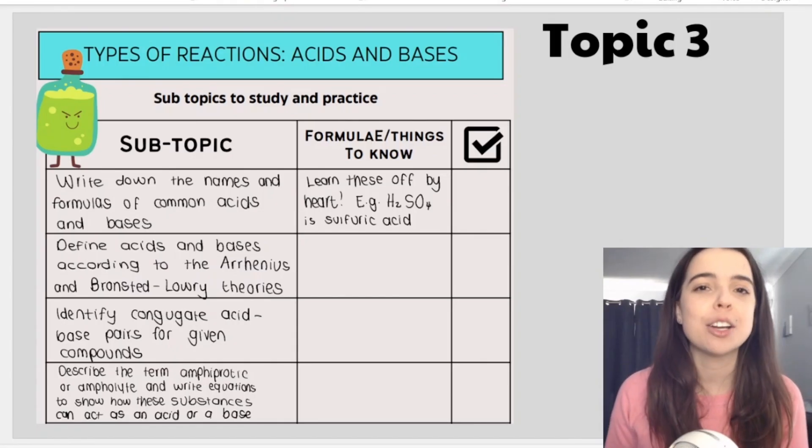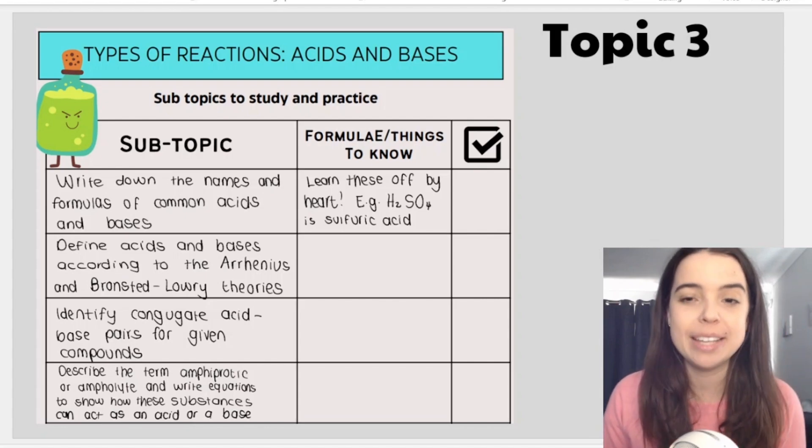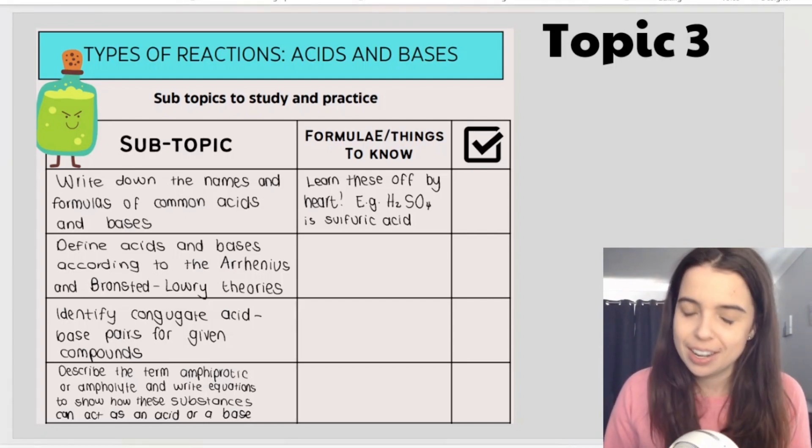Topic three is called types of reactions and in particular you will be learning about acids and bases. Now the extent to which you will learn about acids and bases will depend on the school that you're at. Again, some schools go over this topic already in grade 10. Now acids and bases is something that you are taught in grade 9 natural sciences.